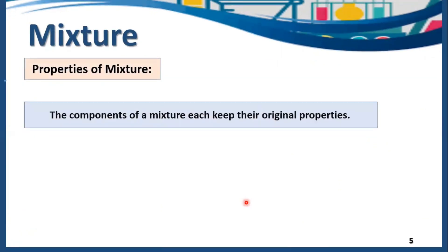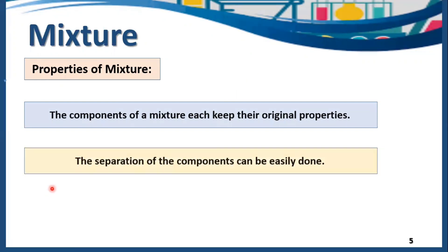Here are some properties of mixture. The components of a mixture each keep their original properties. Taking the example of pebbles and water: both pebbles and water have their own properties because they are mixing physically, not chemically. That's why pebbles have their own properties and water has its own properties — they both retain their properties without any chemical interaction.